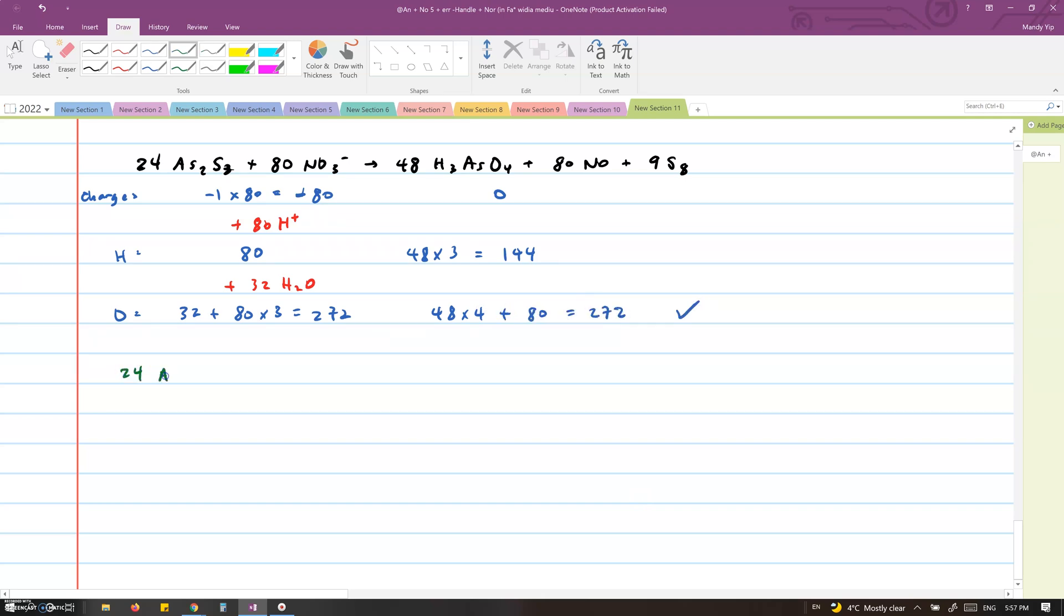So in the end, we will have 24As2S3, plus 80NO3-, plus 80H+, plus 32H2O, producing 48H3AsO4, plus 80NO, plus 9S8.